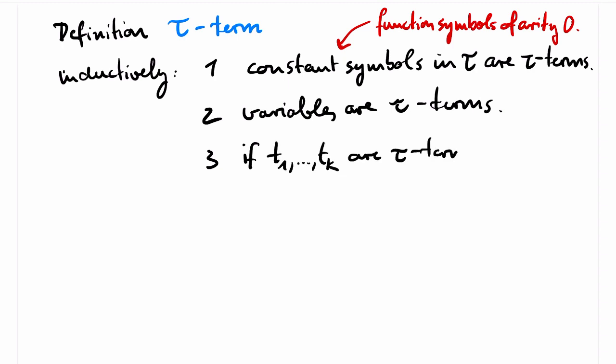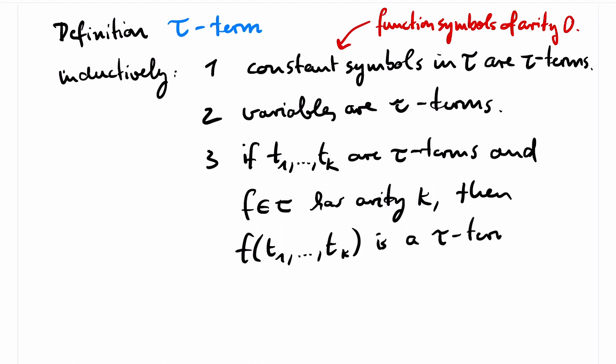And third, if t1 up to tk are tau terms and f is a function symbol from tau of arity k, then f opening bracket, t1 comma and so on until tk closing bracket is a tau term. Note that item 1 is a special case of item 3.